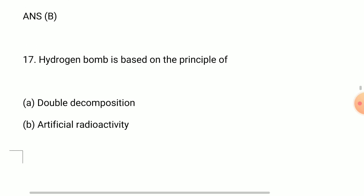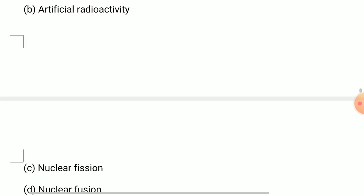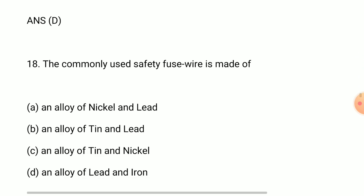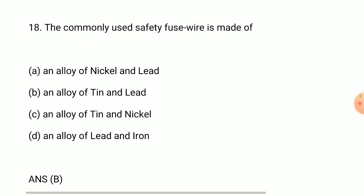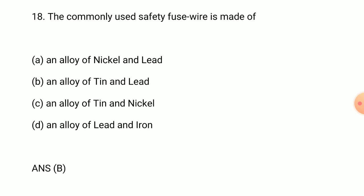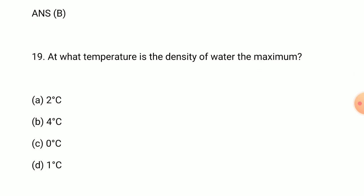Question 17: hydrogen bomb is based on the principle of answer is nuclear fusion. Question 18: the commonly used safety fuse wire is made of answer is an alloy of tin and lead.